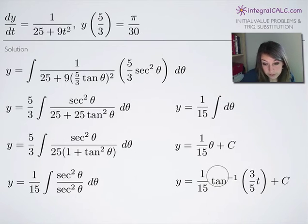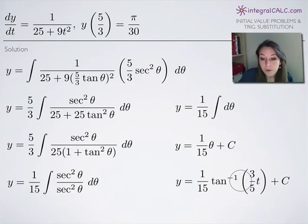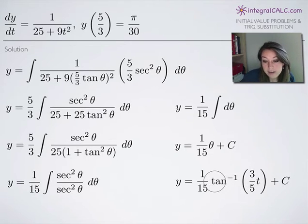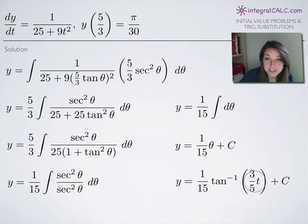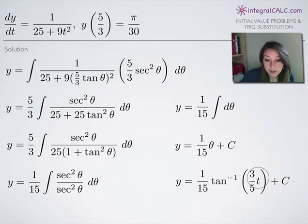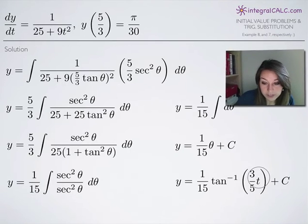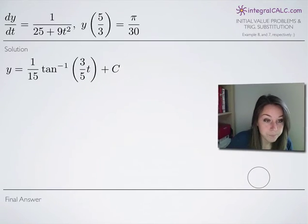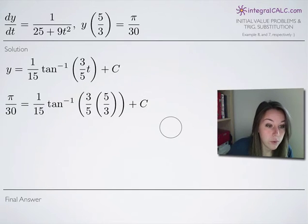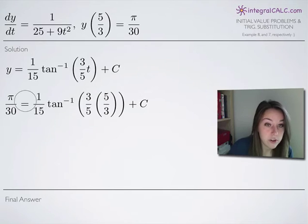From the formula section, we had solved for θ as arctan(3t/5) — that is, the inverse tangent of (3/5)t. We plug this in for θ, giving y = (1/15)·arctan(3t/5) + C. Next, we'll apply the initial condition to solve for C.